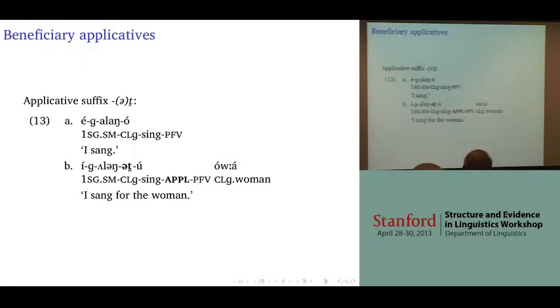Moro also has an applicative construction — a beneficiary applicative construction — that can add an object argument. In 13a, we see an intransitive. In 13b, 'I sang for the woman,' with 'woman' showing up as a typical object.